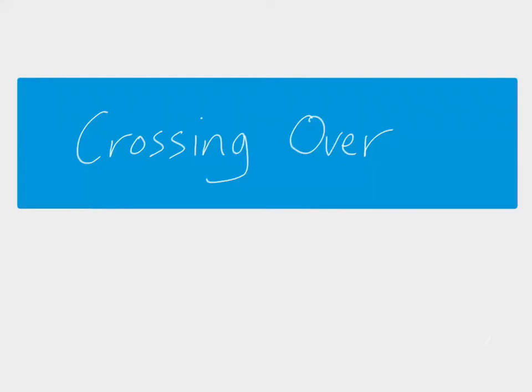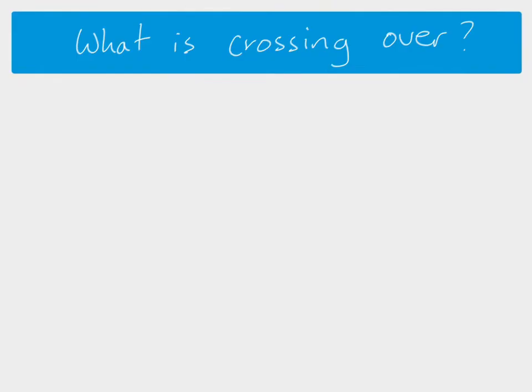Hi everybody, so this video is looking at crossing over, which is a process that takes place during meiosis. And crossing over is where sections of non-sister chromatids get exchanged during prophase 1 of meiosis, and it's a way that genetic variation is introduced into cells.